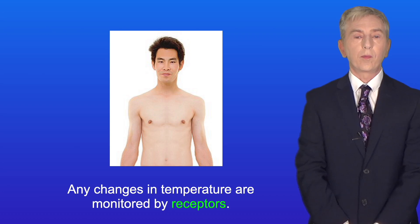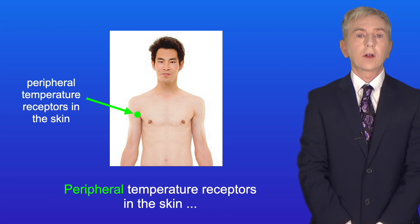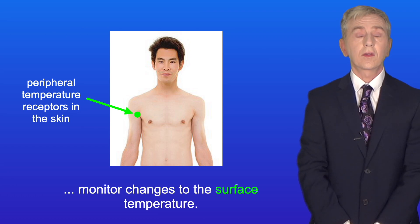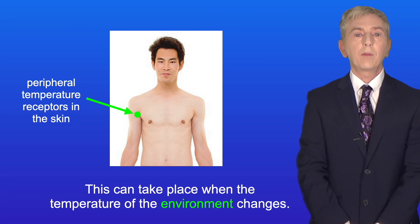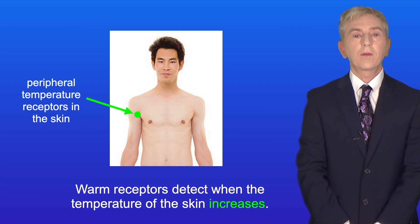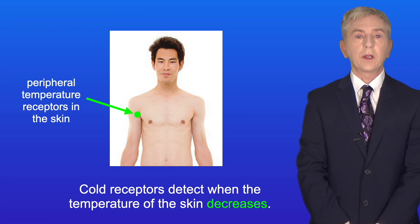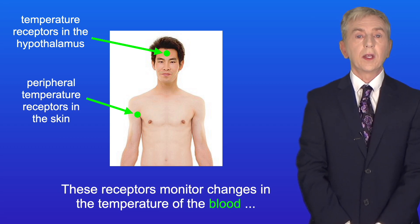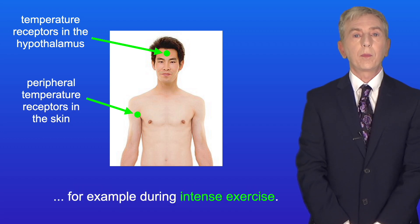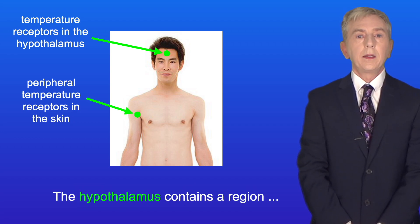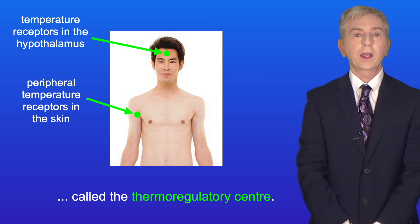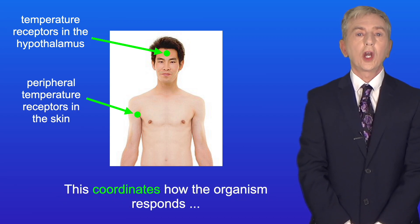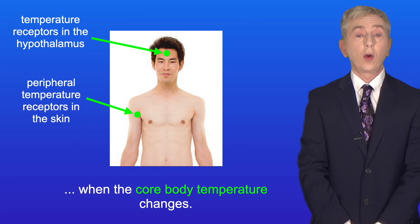Any changes in temperature are monitored by receptors. Peripheral temperature receptors in the skin monitor changes to the surface temperature, which can take place when the temperature of the environment changes. Warm receptors detect when the temperature of the skin increases, and cold receptors detect when the temperature of the skin decreases. We also find temperature receptors in the hypothalamus in the brain. These receptors monitor changes in the temperature of the blood, for example during intense exercise. The hypothalamus contains a region called the thermoregulatory center, which coordinates how the organism responds when the core body temperature changes.